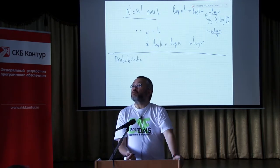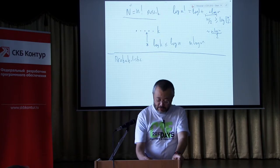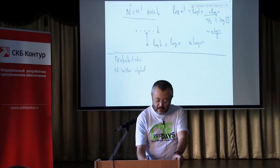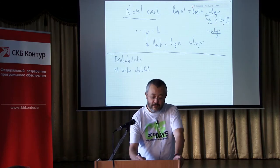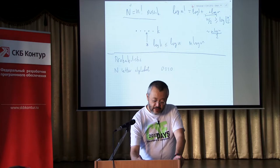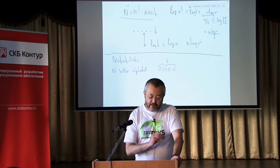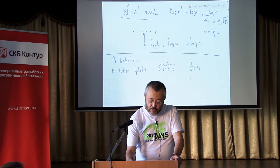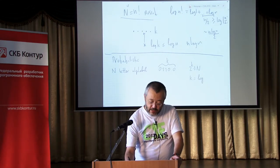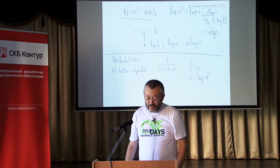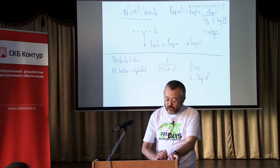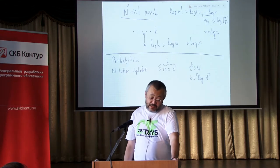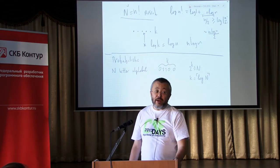Let's repeat what we learned from our simple example. Imagine we have an N-letter alphabet and we want to encode each letter — like in Morse code — by a bit string of length K. We need 2^K to be greater than N, so K should be at least log N (rounded up). Then each letter of our alphabet can be encoded by these bit strings.